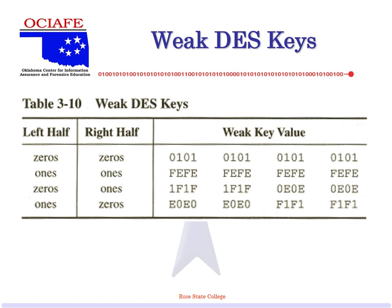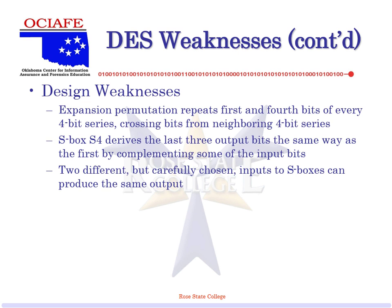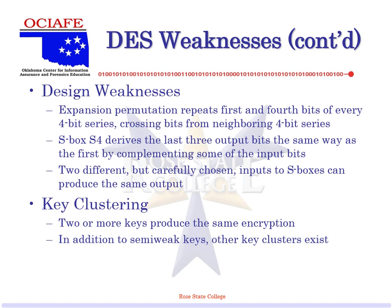Semi-weak keys: if specific keys are made that multiple keys can decrypt — that's a bad thing. We don't want more than one key to work. Weak keys are all zeros, all ones, or one half the opposite of the other. Design weaknesses: expansion permutation repeats the first and fourth bit of every fourth bit. S-boxes derive the last three output bits in the same way as the first. Two different but specifically chosen S-boxes can produce the same output — that's a collision, we don't want that. Key clustering: two or more keys producing the same encryption — we don't want that either.